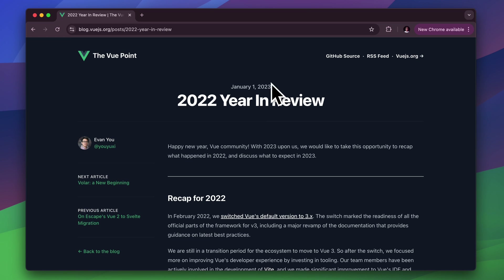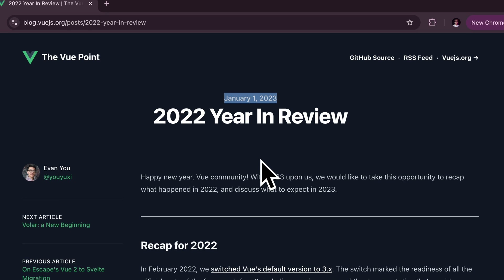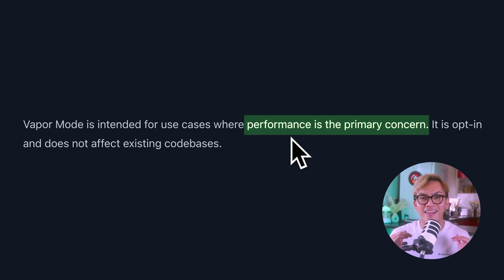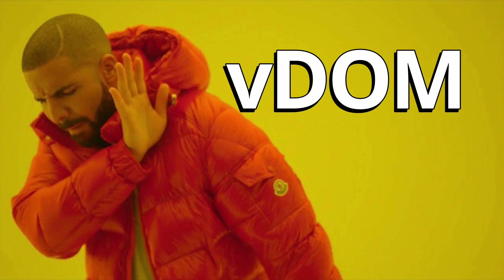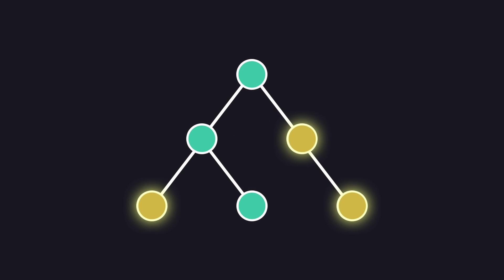Vue has been working on this for quite some time. In fact, it was introduced back in January of 2023 where the main intention for this strategy is to improve the performance of applications and to make them more lightweight. The answer is by not using VDOM, because the main issue with VDOM is it would still have to go through the DOM trees and check every virtual node for differences.